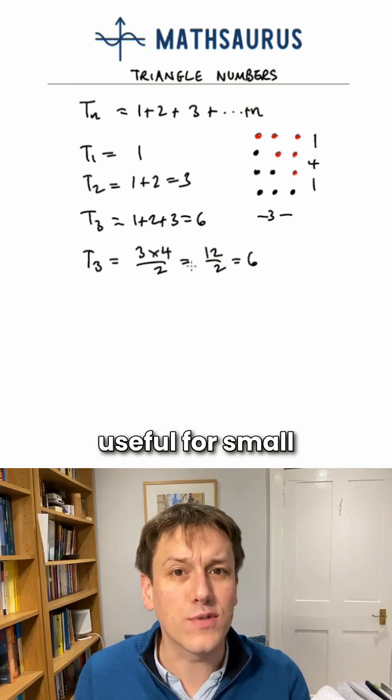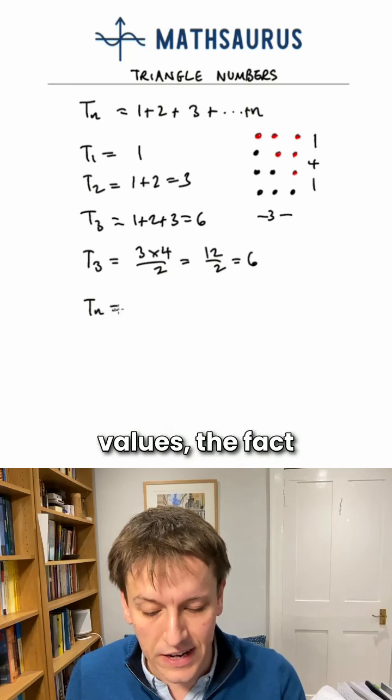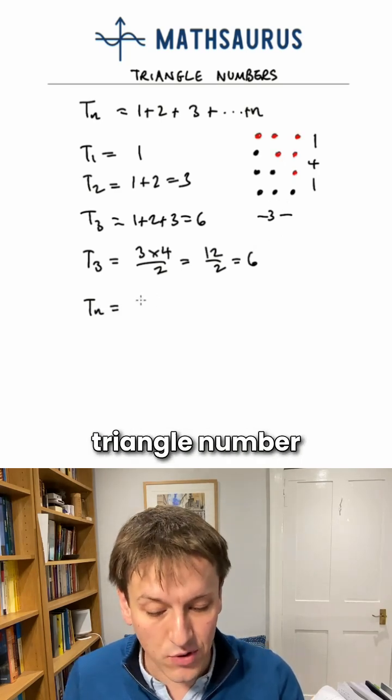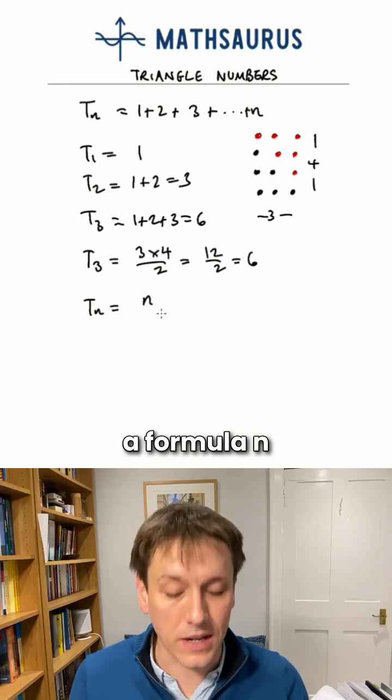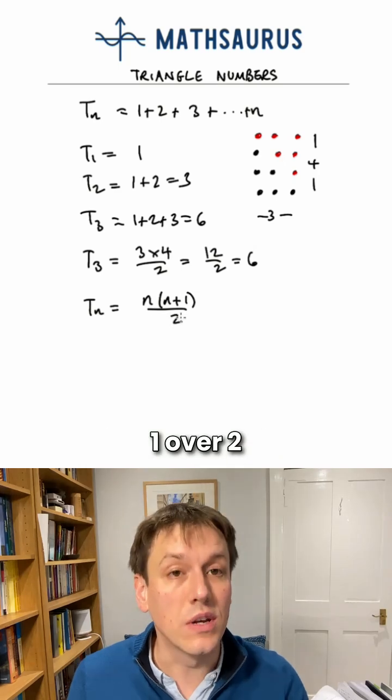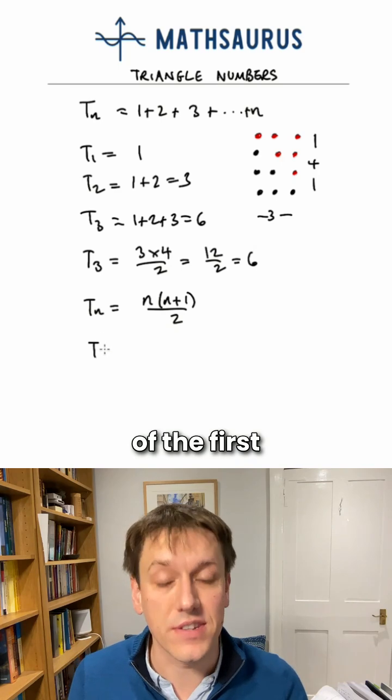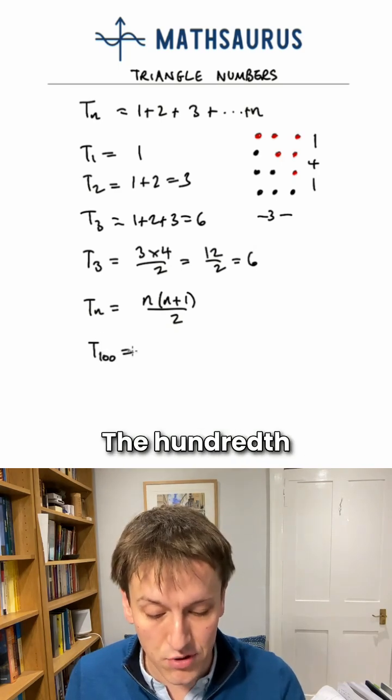That's not that useful for small values, but for larger values, the fact that you can generalize that argument for the nth triangle number so that we get a formula n times n plus 1 over 2 is very helpful, because it means, for example, I could just work out the sum of the first 100 natural numbers, the 100th triangle number.